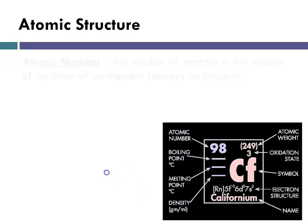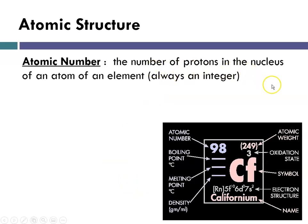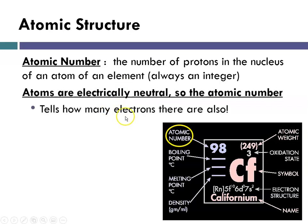The atomic number is the number of protons in the nucleus of an element, and it's always going to be an integer — it's a count. The identity of an element is determined by its atomic number, so the number of protons in the nucleus is the identity of an element. The atomic number also gives you the number of electrons, because atoms are electrically neutral. So the atomic number for a neutral atom tells you the number of protons in the nucleus and the number of electrons outside the nucleus.